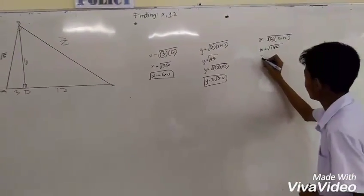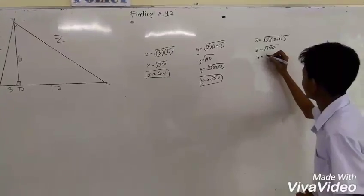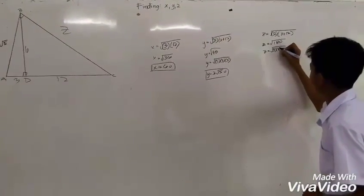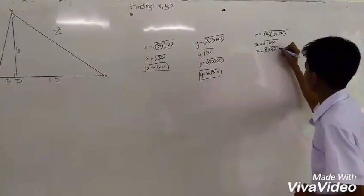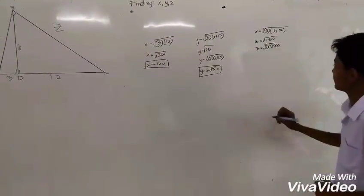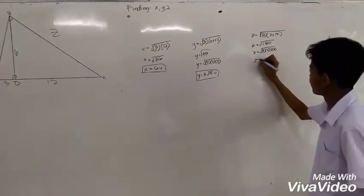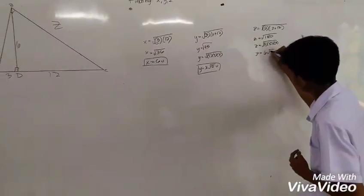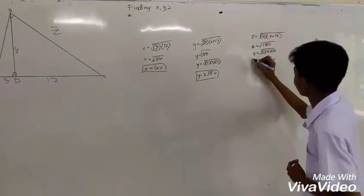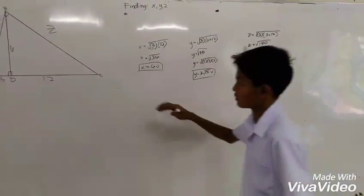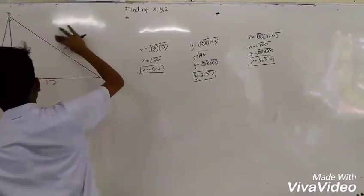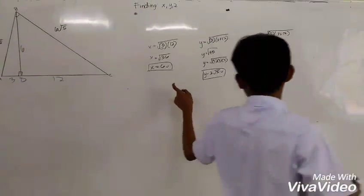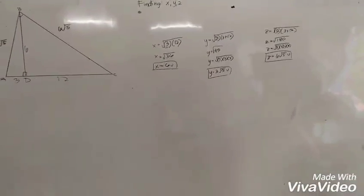If we extract the square root of 180, we factor it as 6 multiplied by the square root of remaining factors. That is how we find the missing values of this diagram.